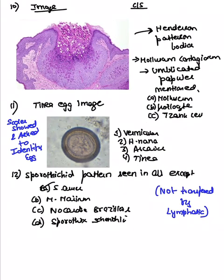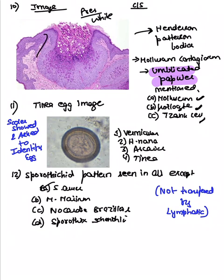An image question showed a history of umbilicated papule. Options included molluscum and koilocyte (koilocyte is seen in HPV infection). For molluscum contagiosum, the typical history is umbilicated papule with whitish discharge on pressing. The inclusion bodies are Henderson-Peterson bodies. The special stain is phloxine tartrate stain — important for MCQs.